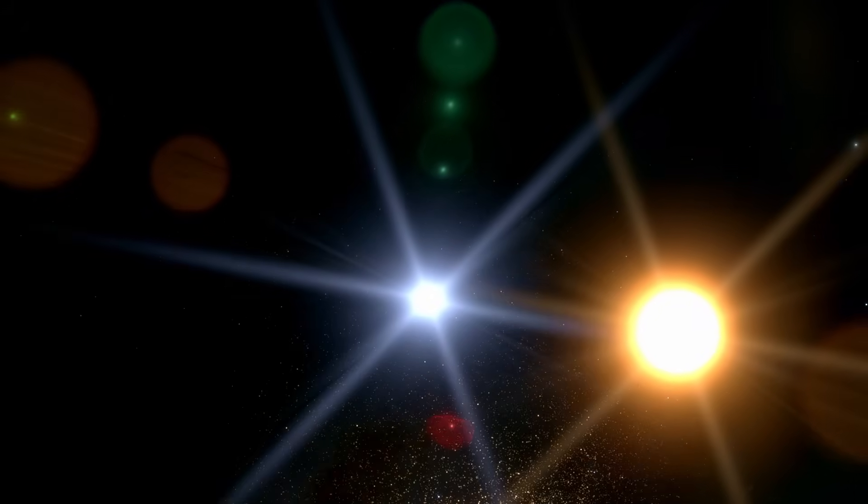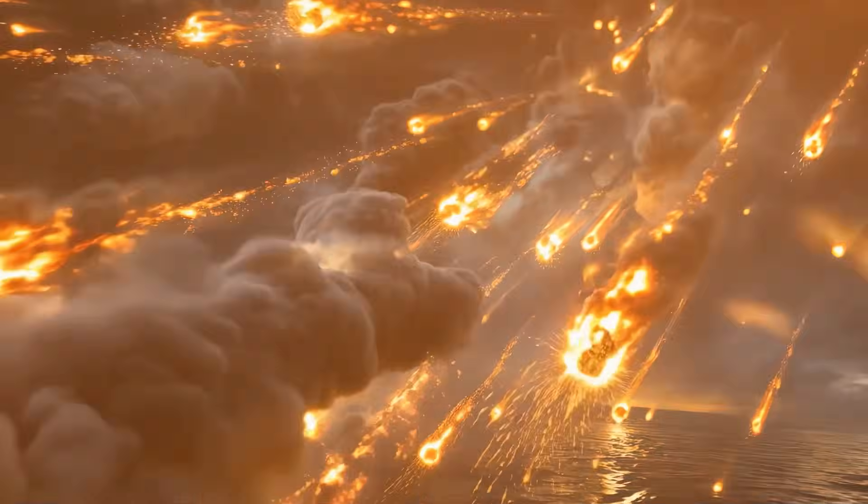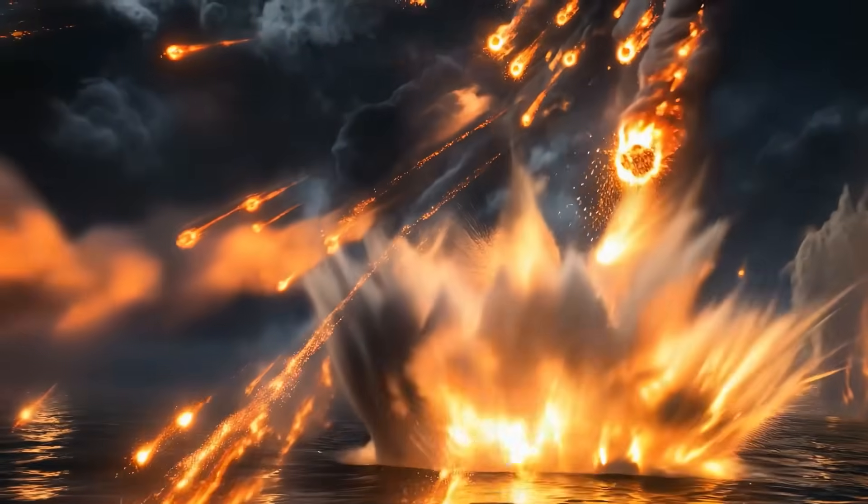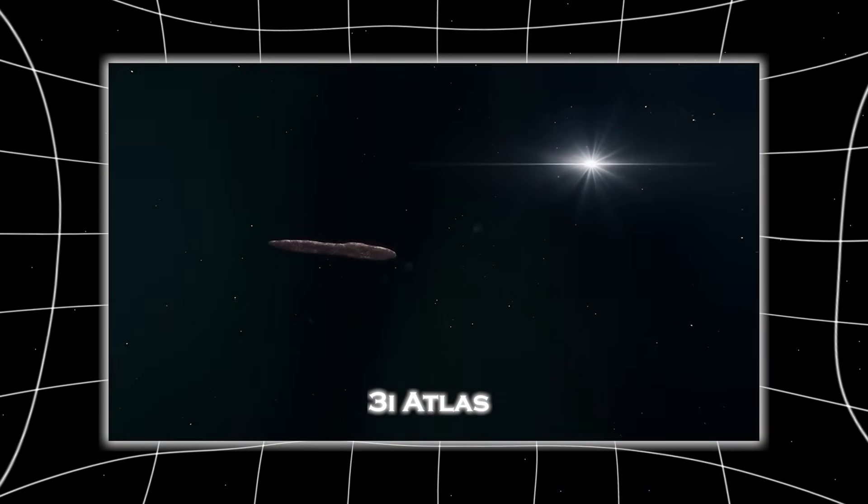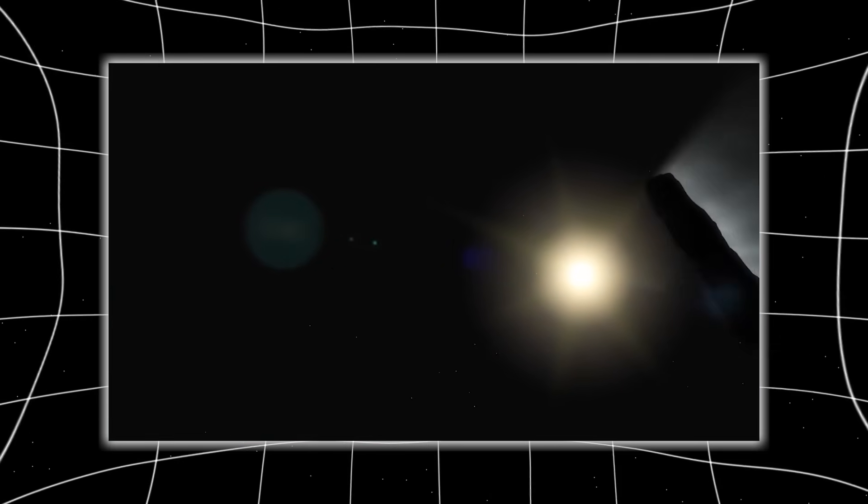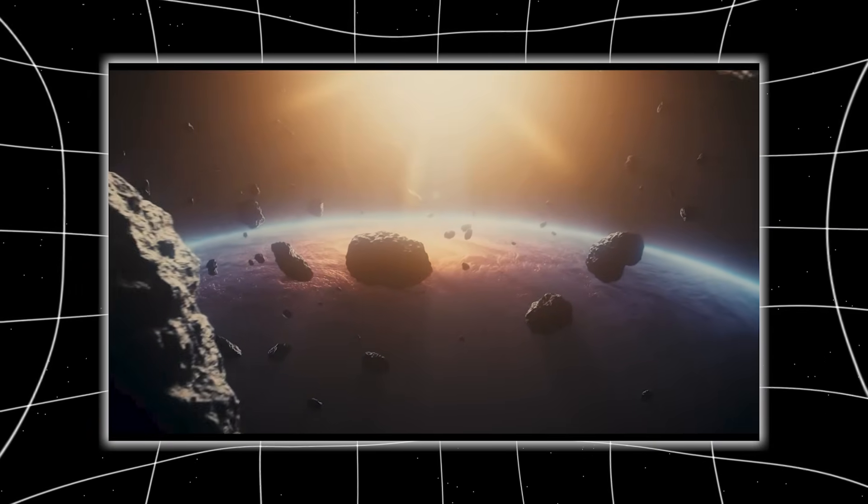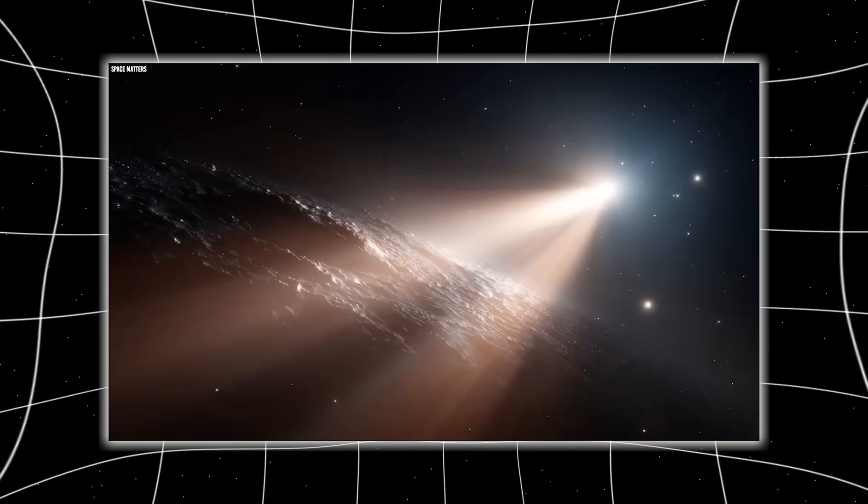Every known comet from our own solar system suffers when approaching the sun. They crack, they fracture, their nuclei burst under thermal stress like frozen stones thrown into a bonfire. Even large, dense comets rarely emerge unscathed. Yet 3i Atlas, already tiny, barely one kilometer wide, should have been even more vulnerable. Instead, it emerged from its solar encounter not weakened, not broken, not shedding pieces, but intact. Perfectly intact.